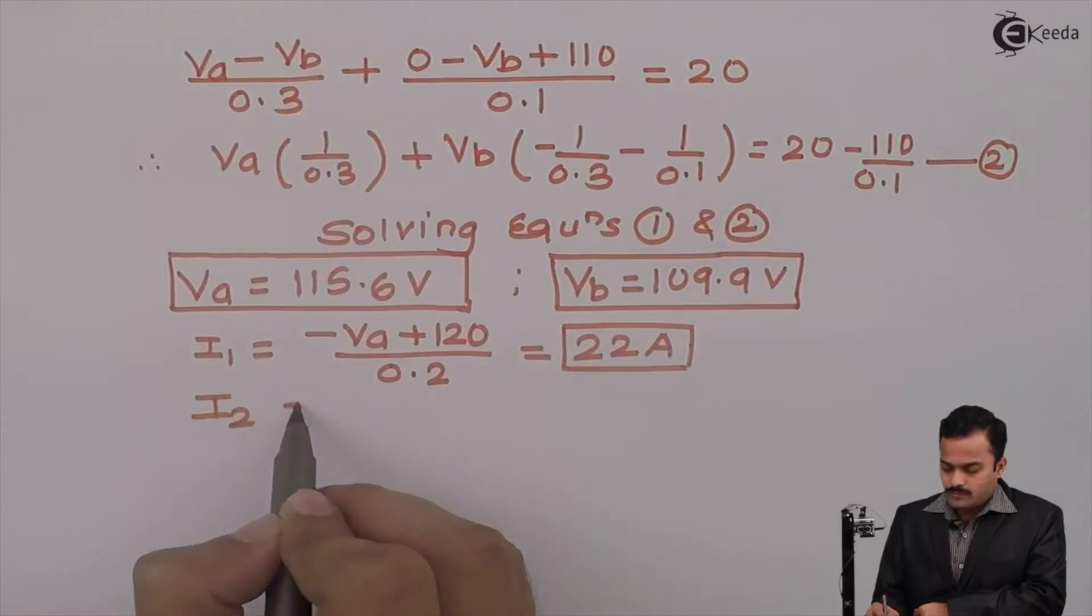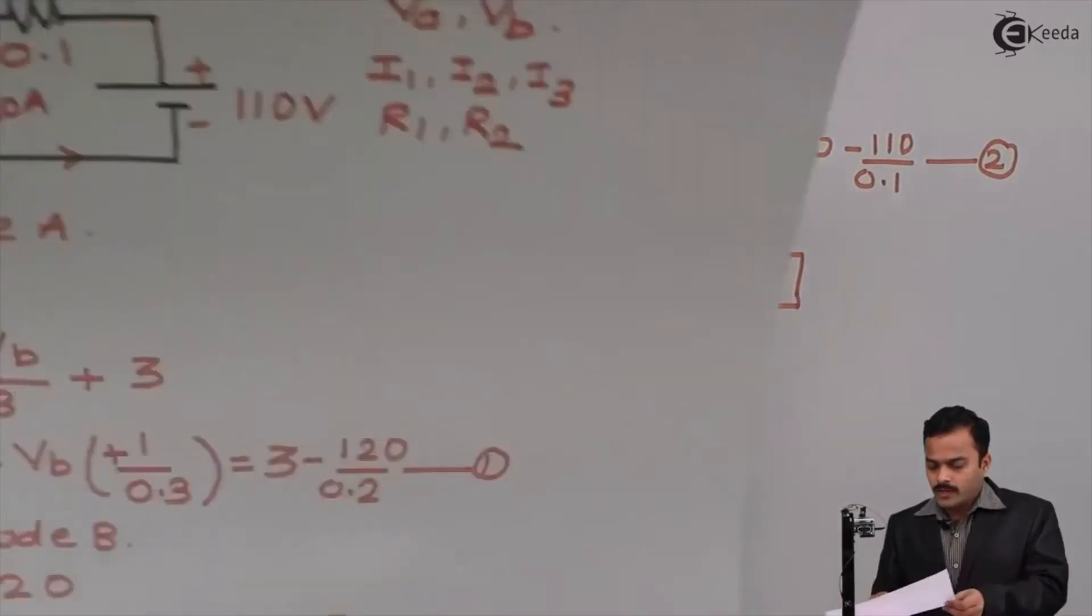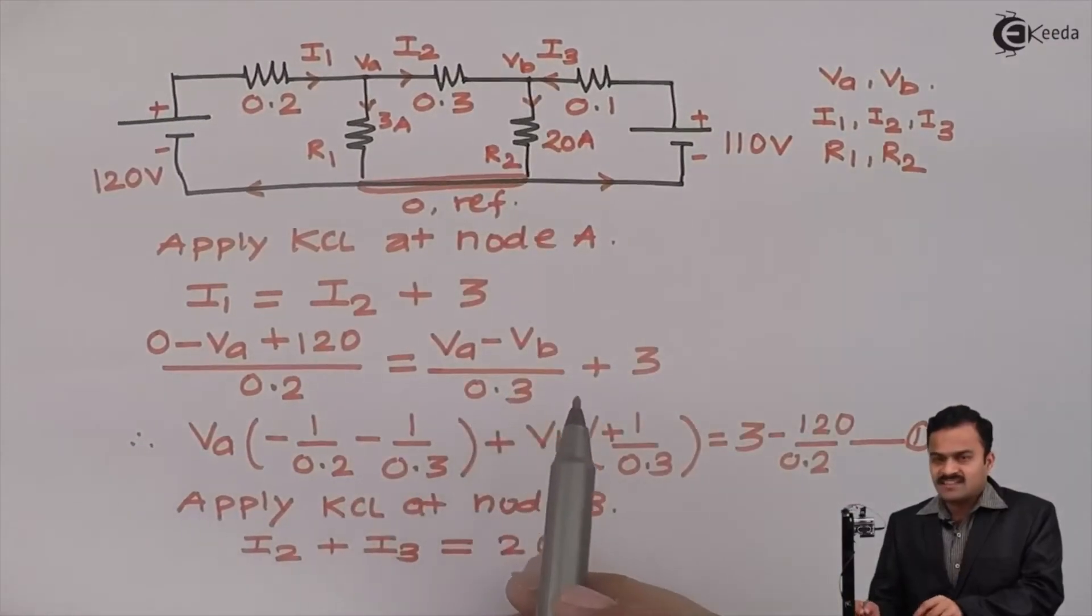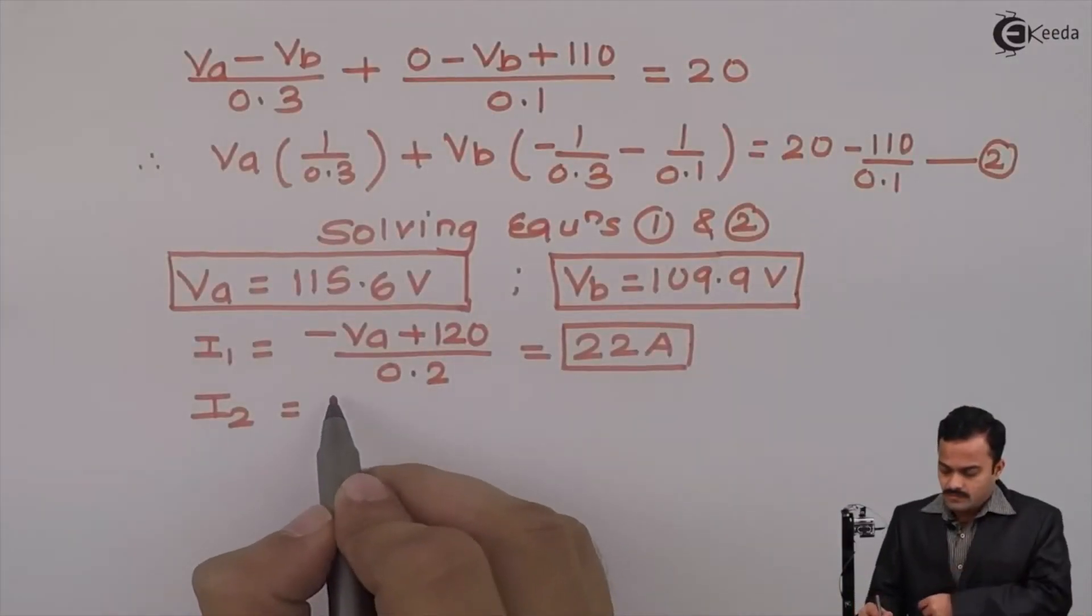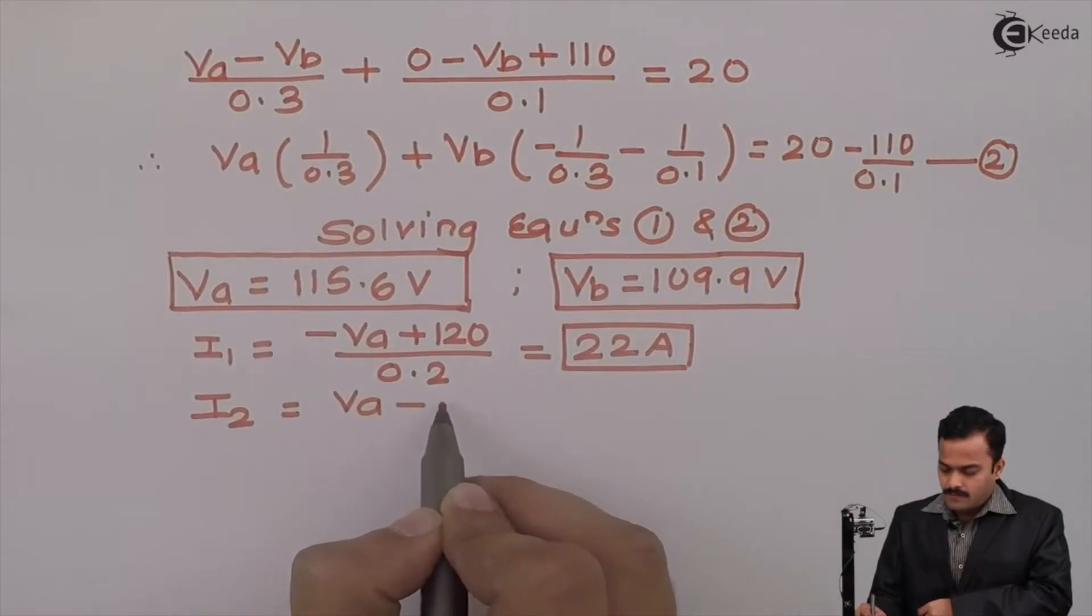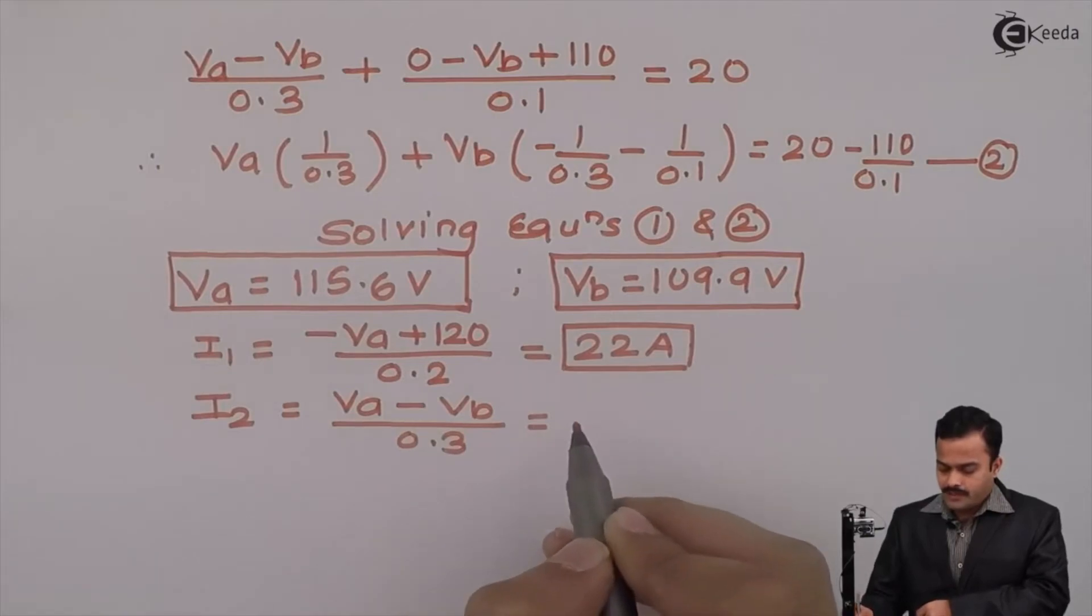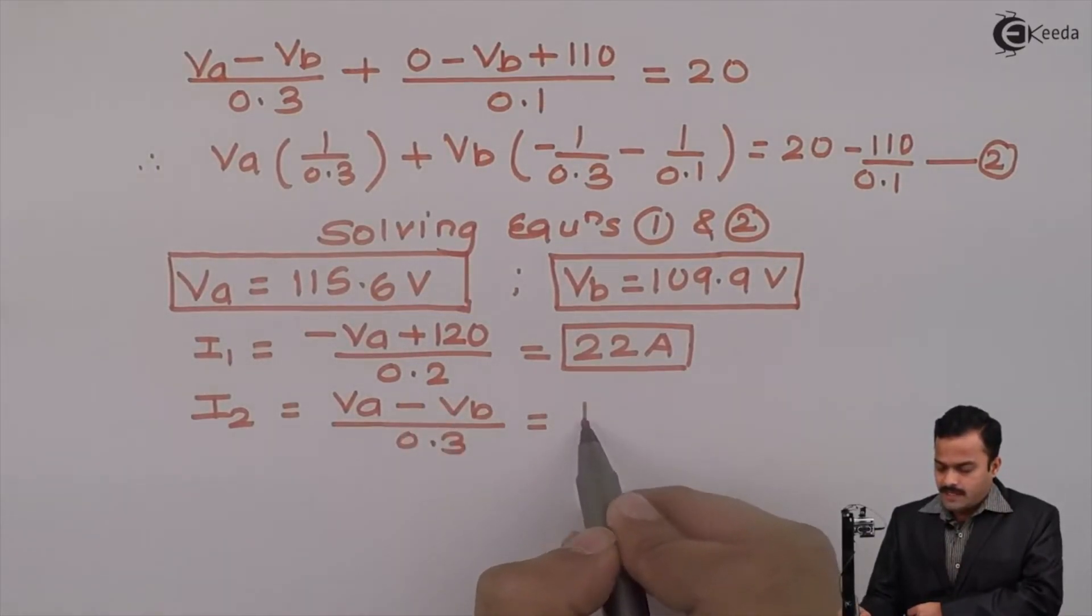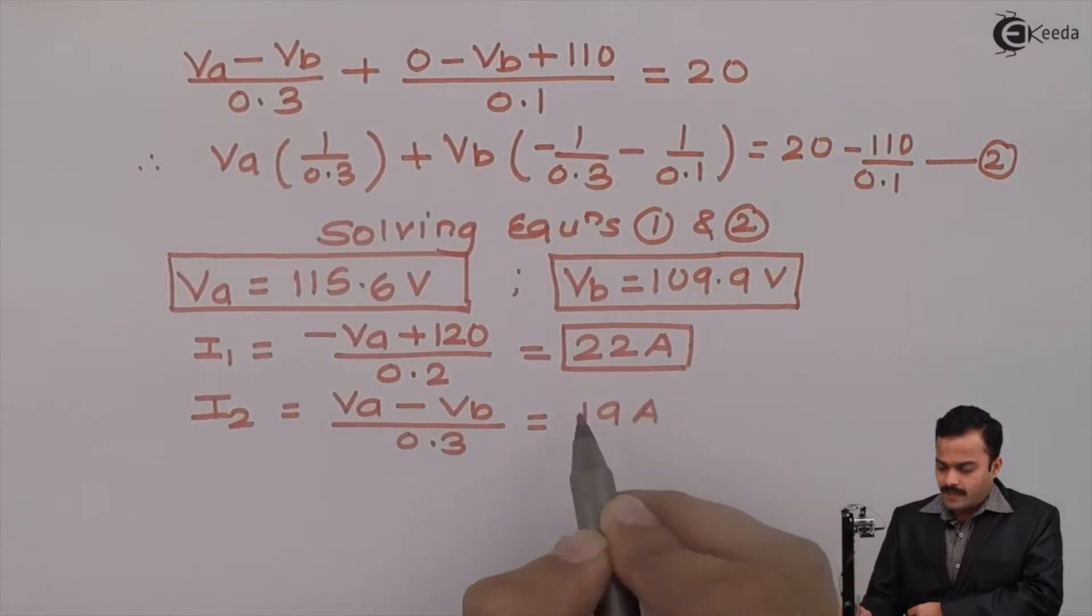Similarly, I2. I2 equals Va minus Vb upon 0.3. After substituting the values of Va and Vb, I will get answer 19 Ampere.